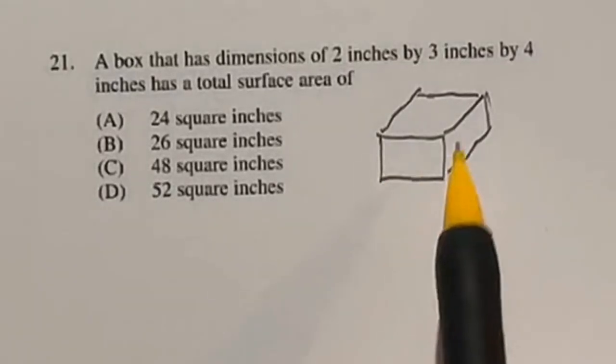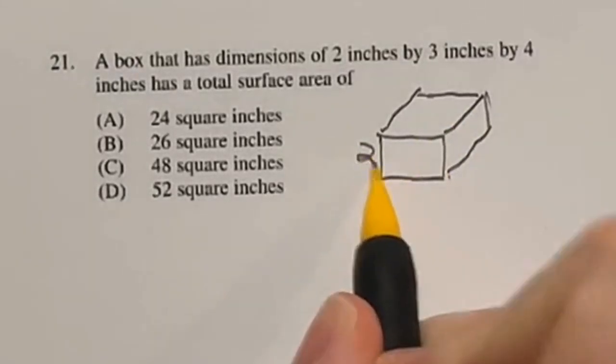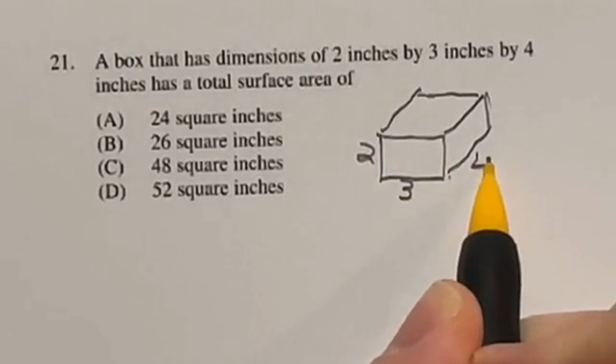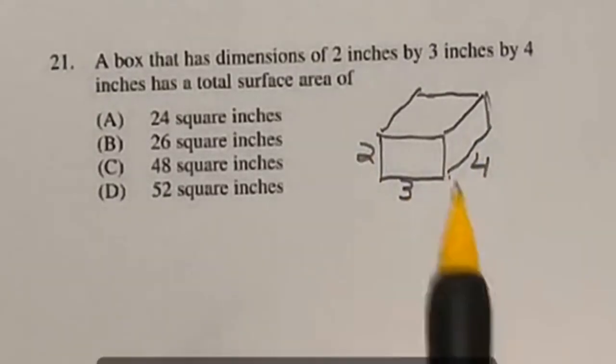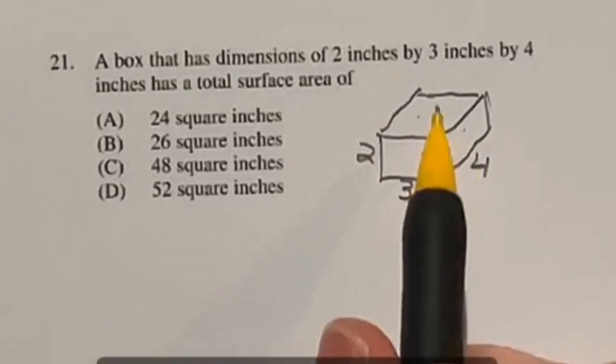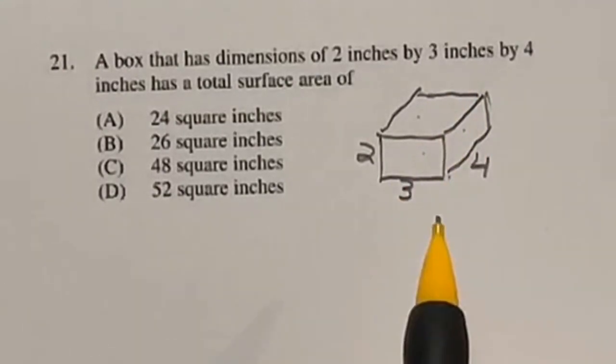So in 21, we have a box here that is 2 by 3 by 4, and they want to know the surface area, which is when you find the area of each one of these rectangles on all six sides and add them together.